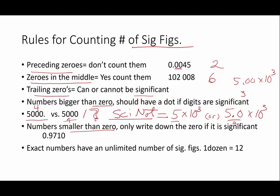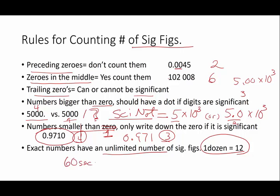Now, if you have numbers that are smaller than zero, only write down the zero if it's significant. So, if I have this number written down, and the whole number is smaller than one, let's say smaller than one, if this is smaller than one, you write down the number only if it's significant. So 0.9710, I have four sig figs. But what if I only had three sig figs? 0.971 would indicate I only had three significant digits. Exact numbers have an unlimited number of significant figures. What do I mean by an exact number? There are exactly 12 objects in a dozen. There are exactly 60 seconds in one minute. That's an exact number. So does this limit number of significant digits? Not at all, because this is exact. It's a counting number. If you count something with counting numbers, they have unlimited sig figs.